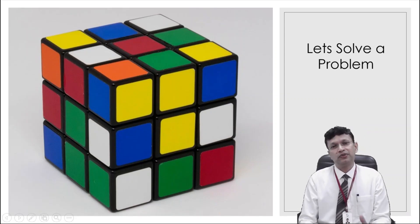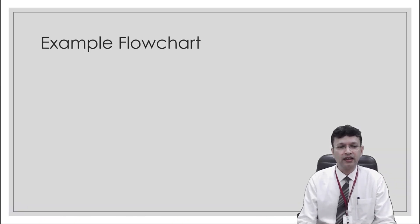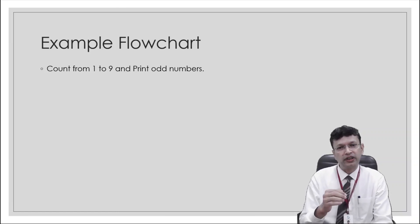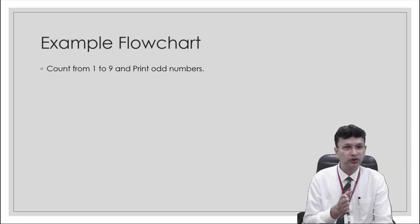So now you know about the building blocks of the flowchart. You know what is flowchart. Let's solve a problem. So take, for example, we need to count from 1 to 9, 1, 2, 3, 4 and so on up to 9. And we need to print only the odd numbers, not the even numbers. So we need to count and print odd numbers. So we'll be printing 1, 3, 5, 7 and so on.